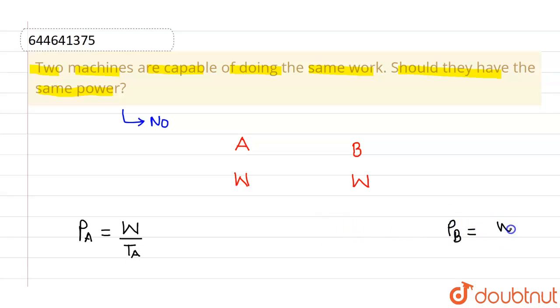So in both the cases, since work done are equal, I can say that PA times TA will be equal to PB times TB. Therefore, it is not necessary that their power will be the same.